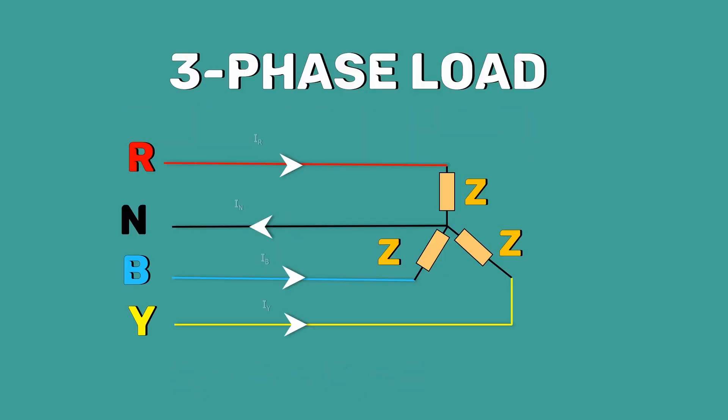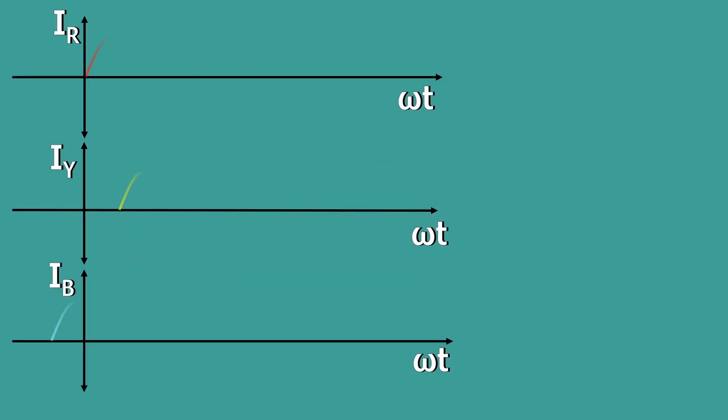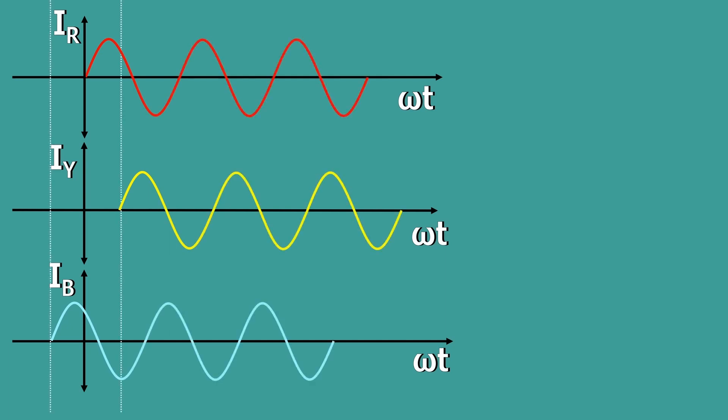Here, the three phase voltages and currents are completely balanced. This means the current in each phase has equal magnitude and is displaced in time phase by 120 degrees.